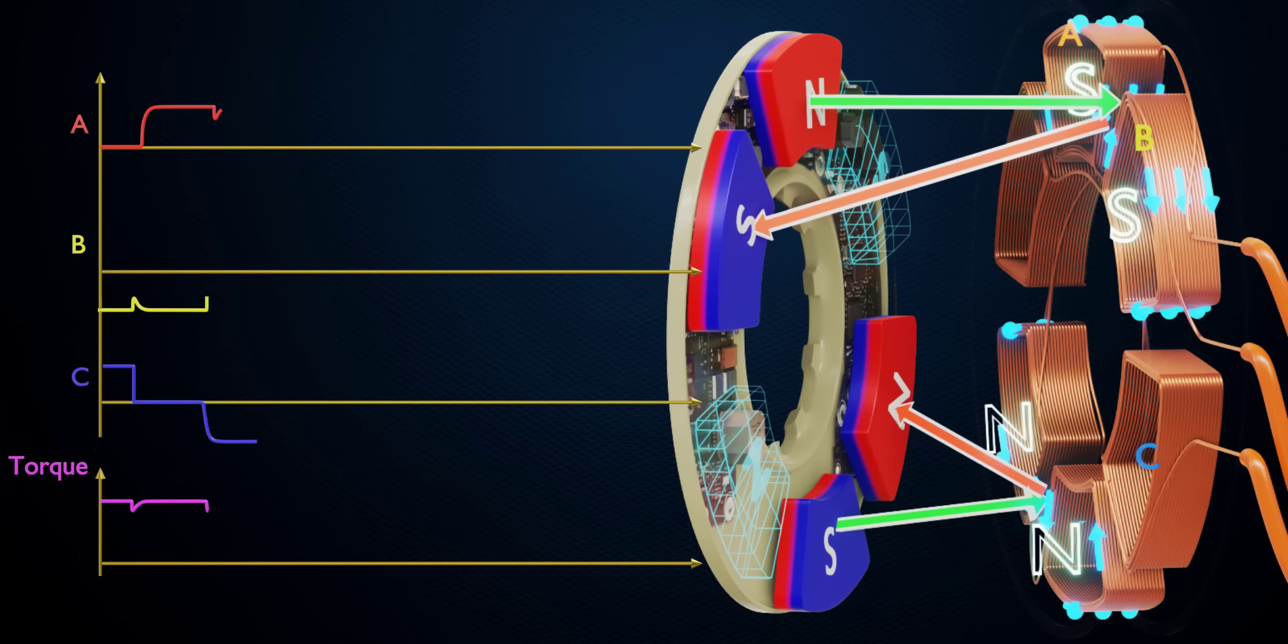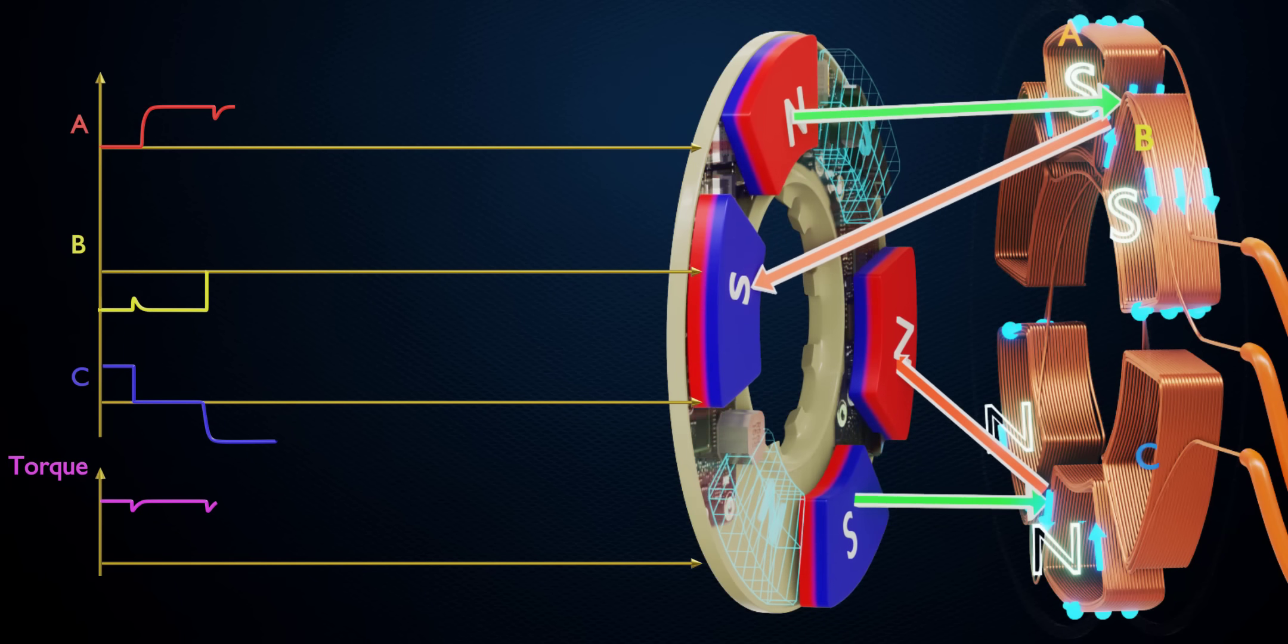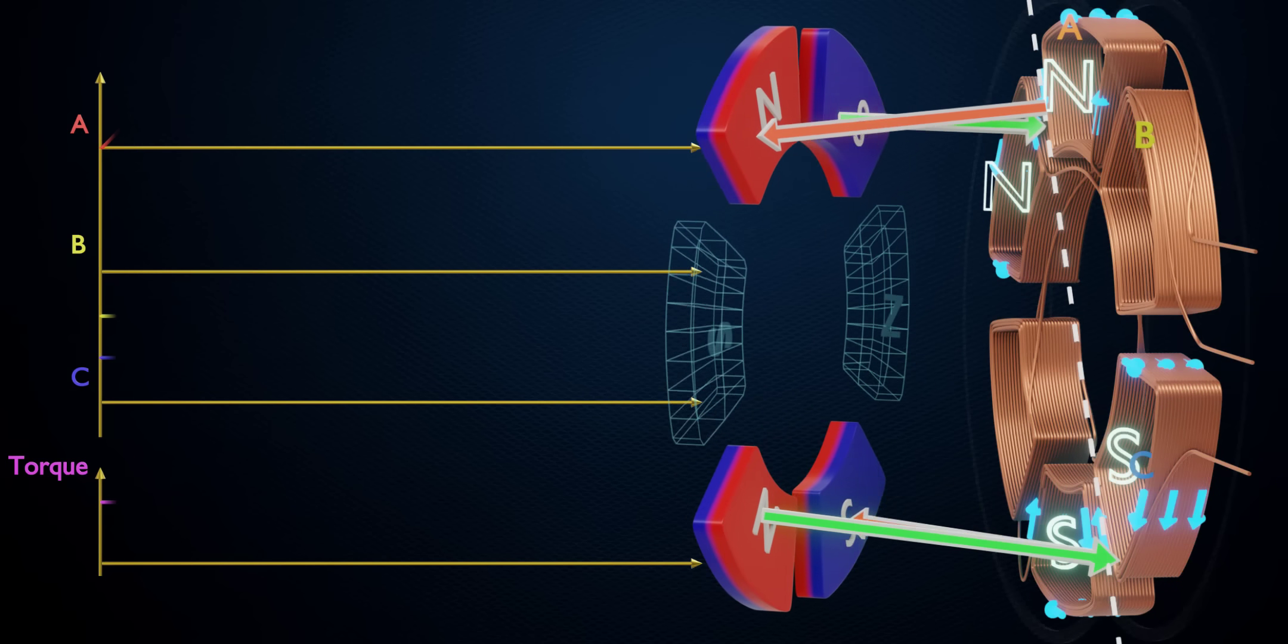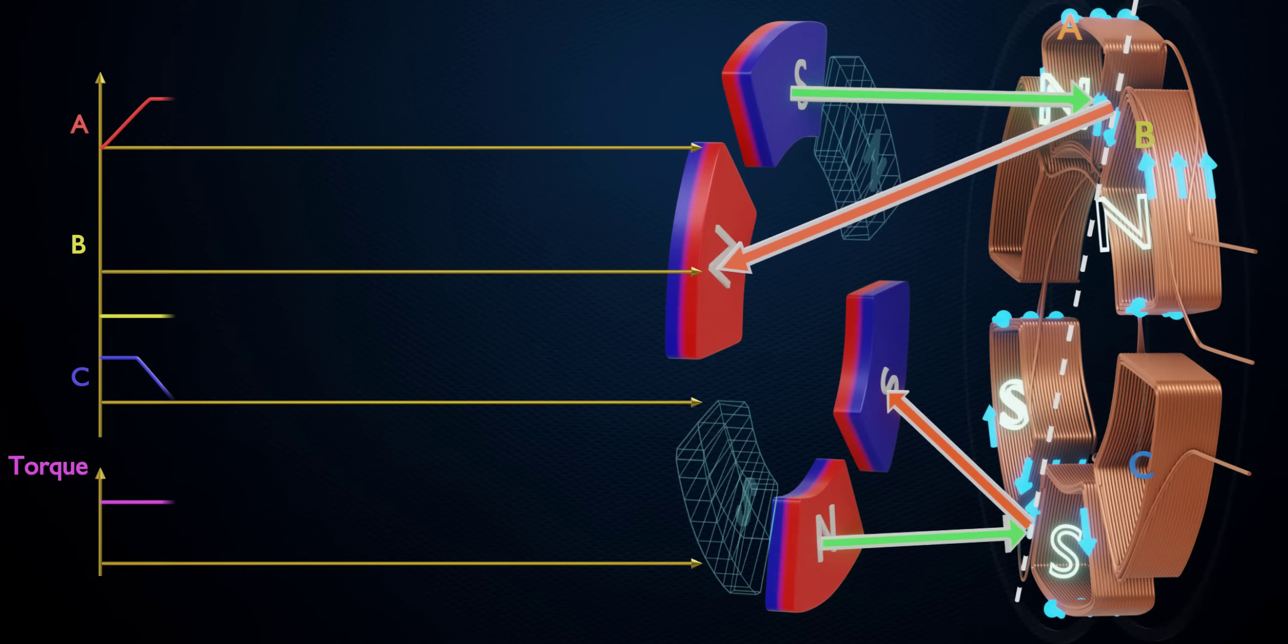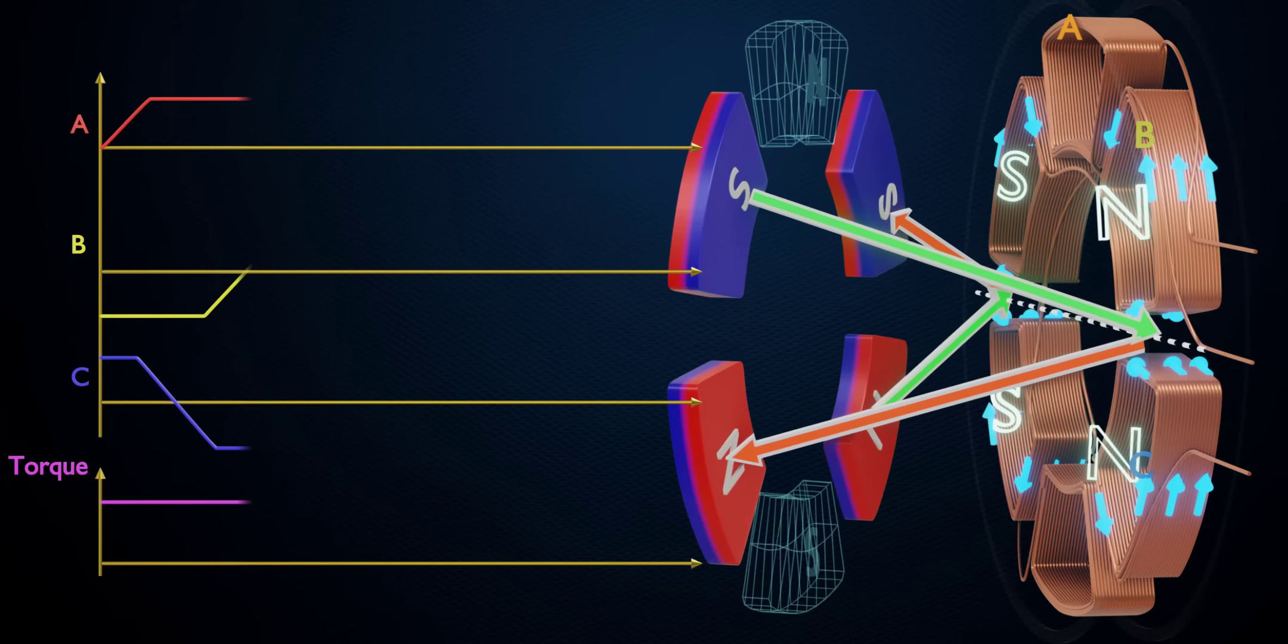Thus, the torque quality will be affected. The best solution to overcome the issue is to gradually kill or raise the phase current resulting in a pattern like this.